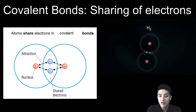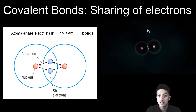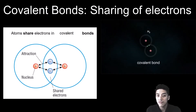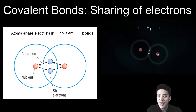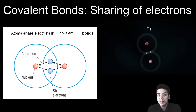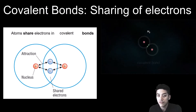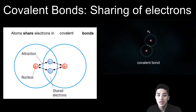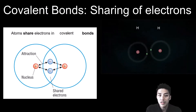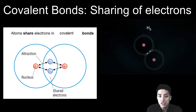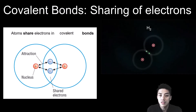Covalent bonding is a sharing of electrons. It's different from ionic bonds where one atom just completely gives up its electron to a different atom. In covalent bonding, two atoms are sharing electrons.